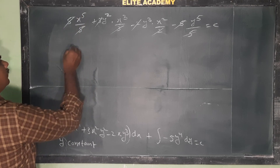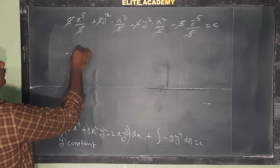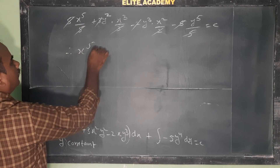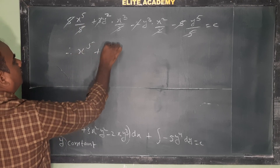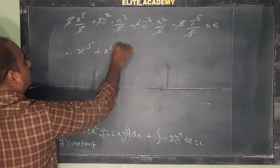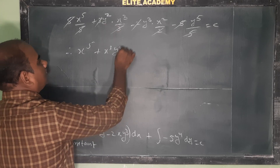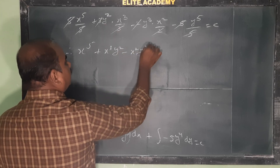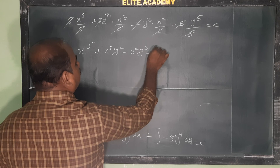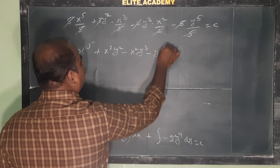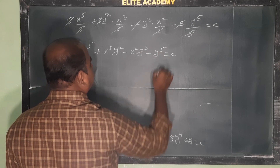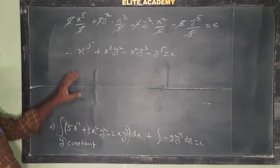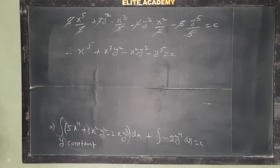After cancelling common factors, the required general solution is: x⁵ + x³y² − x²y³ − y⁵ = c.